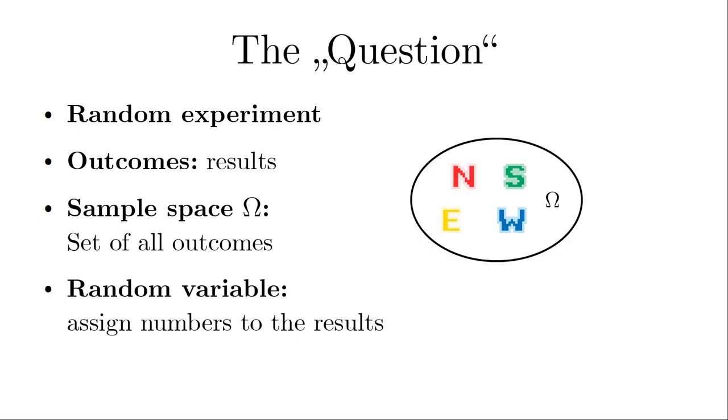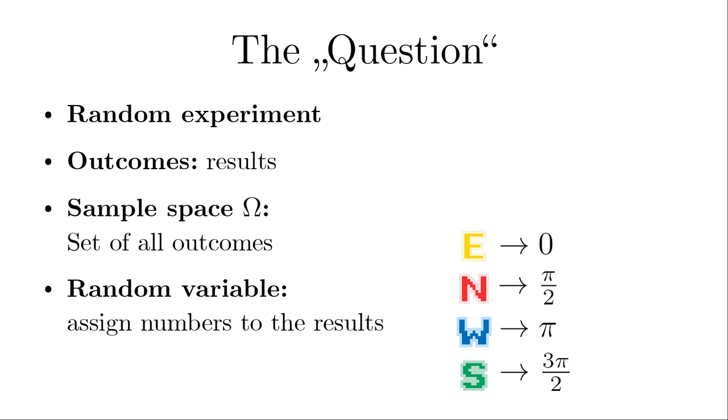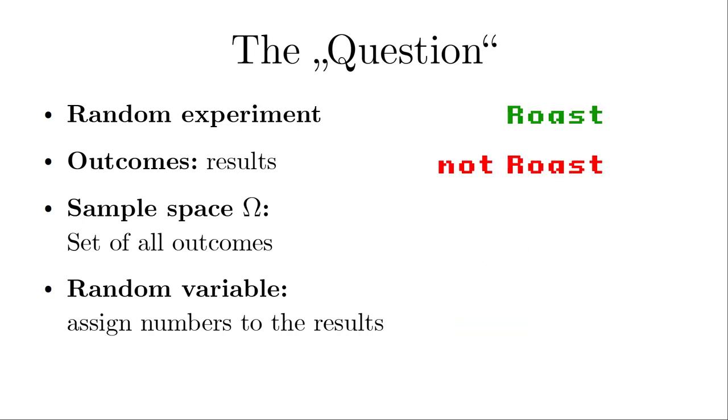A question can be associated with a random variable that assigns a real unique number to each outcome. This is especially useful for measurable results, like the number of pips on a die or the weight of a fish. For the directions of the random compass, we can assign an angle. For a question that favors one particular result, one can use 1 for the result itself and 0 for all remaining outcomes.